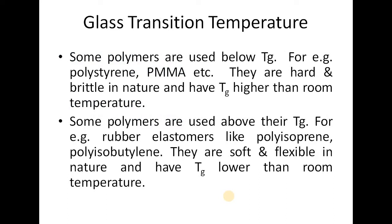Some polymers are used below Tg, for example polystyrene and polymethyl methacrylate. Their Tg is higher compared to room temperature, so they are present in the glassy state at room temperature and show hardness and brittleness. Whereas some other polymers like polyisoprene and polyisobutylene have Tg below room temperature, so at room temperature they are in the rubbery state and show softness and flexibility.